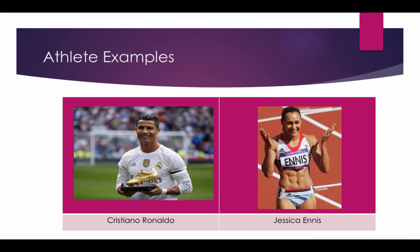Some athlete examples: Cristiano Ronaldo would have a high percentage of Type 2A muscle fibers, as would Jessica Ennis. This is because they are both powerful and able to sprint, however they are not quite as powerful as, for example, Usain Bolt.